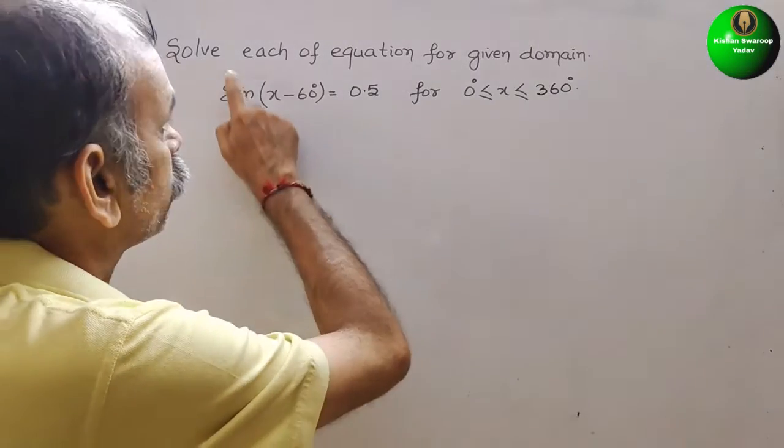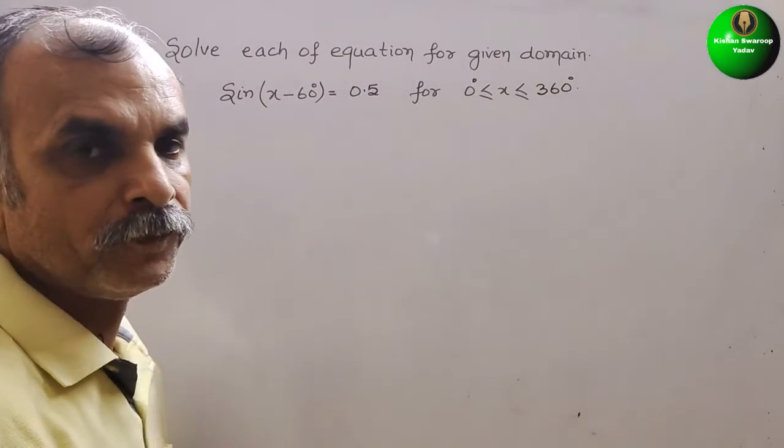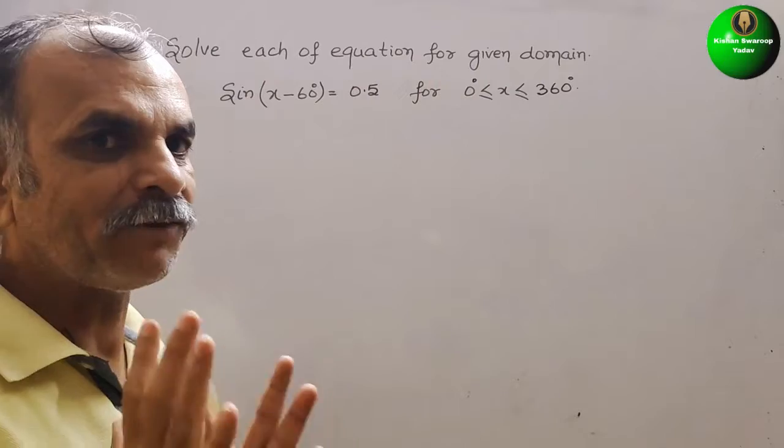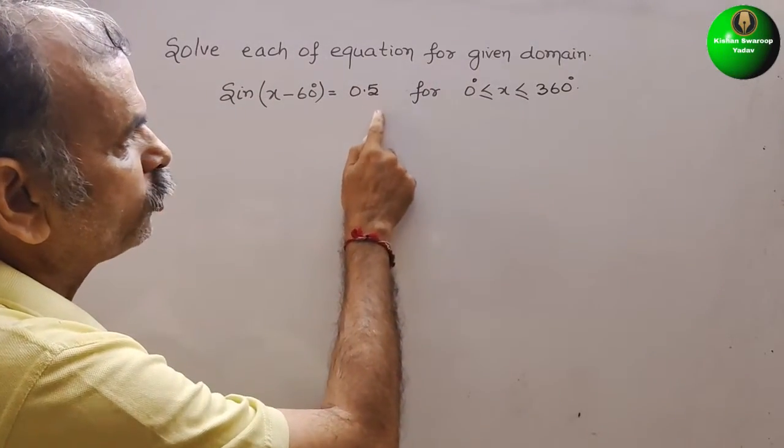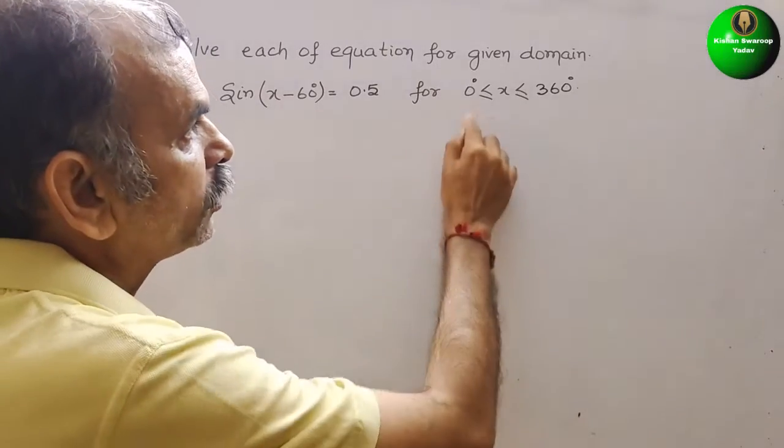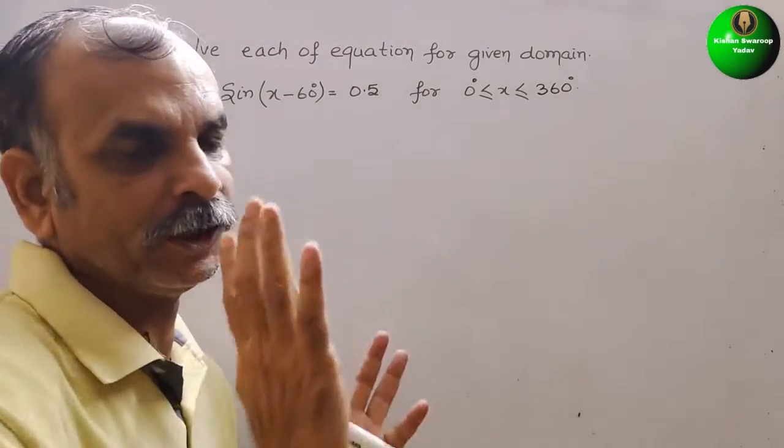Your question is solve each of the equation for given domain. So let's see what they have given: sine of x minus 60 degrees is equal to 0.5 for 0 degrees less than or equal to x less than or equal to 360 degrees.